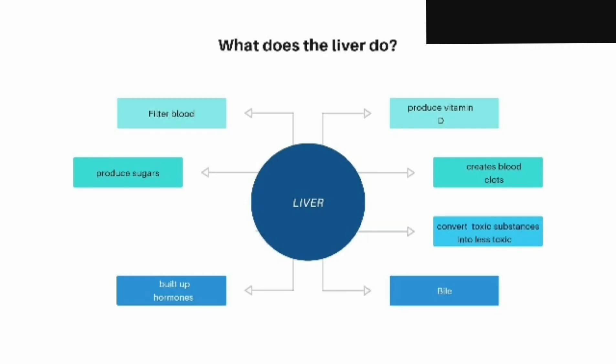The liver is the heaviest organ compared to other organs in the body and has a lot of work to do. First, it filters blood received from the heart and intestine. This blood contains nutrients and oxygen, while blood from the intestine contains carbohydrates, fat, and vitamins. The carbohydrate is converted into sugar used as energy. The liver also builds up hormones from cholesterol and produces vitamin D that takes part in the digestion process. The liver creates blood clotting factors from blood plasma protein, detects toxic substances, and converts them into less toxic substances or removes them. Finally, hepatocytes also produce bile, which goes into the gallbladder and intestine to break down fat and destroy some microbes.